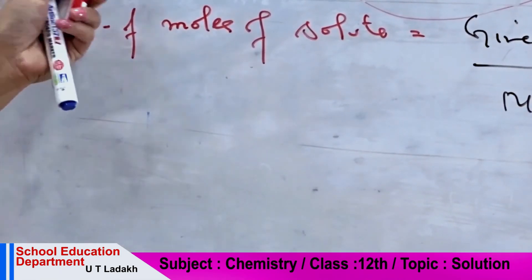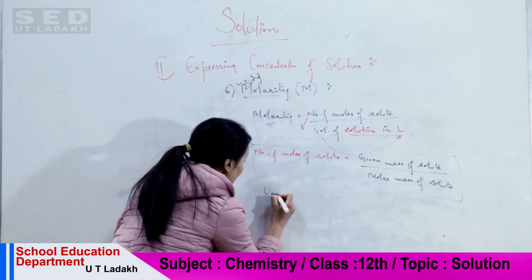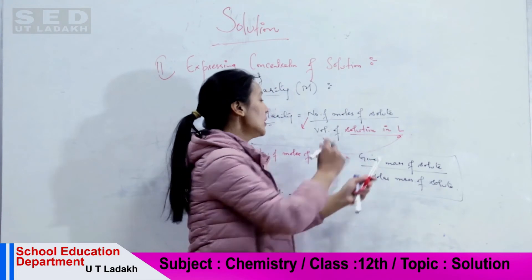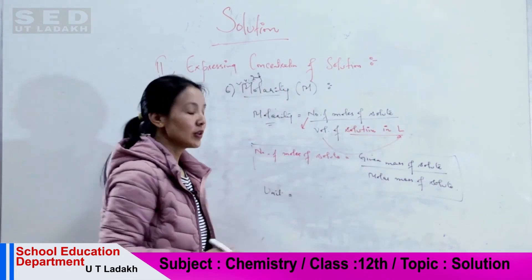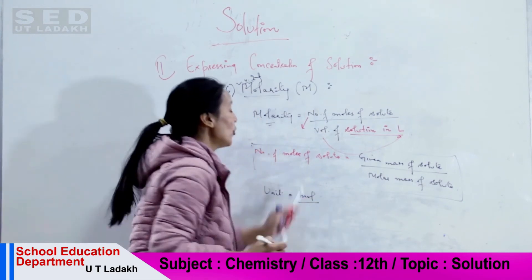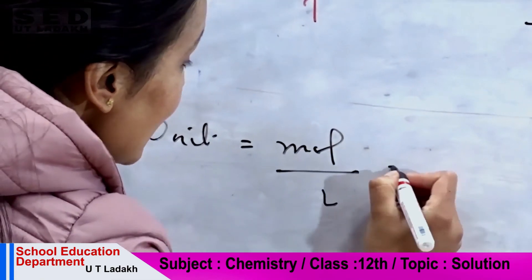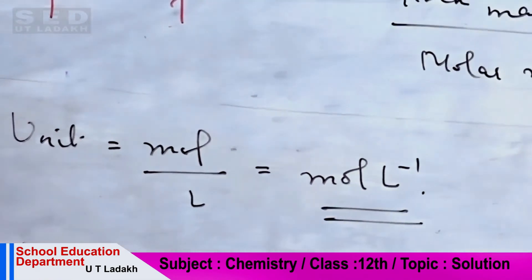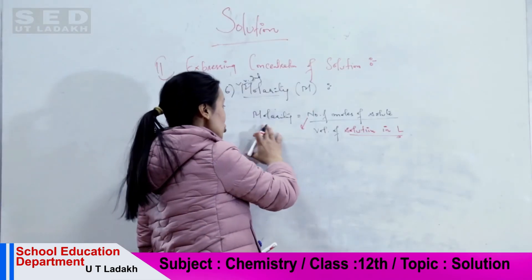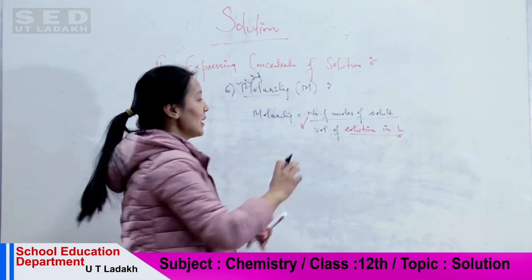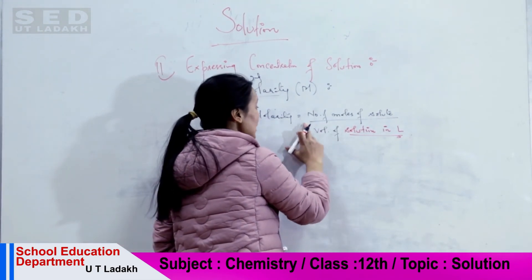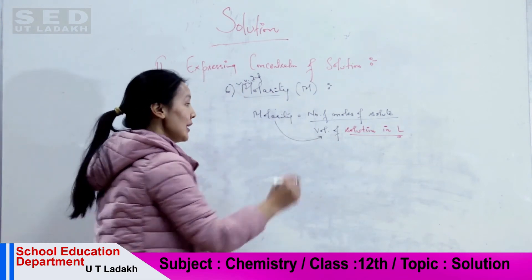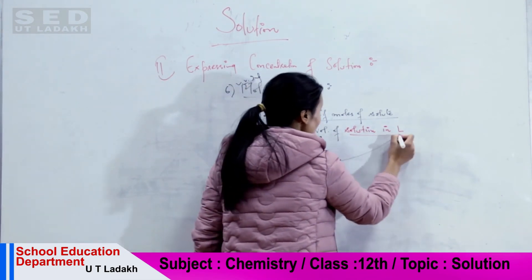Now let us check the unit of molarity. Molarity equals number of moles of solute upon volume of solution in litres, so the unit is moles upon litres, i.e., mol per litre. This is the unit of molarity. An important point: molarity is always related with volume, and volume must always be expressed in litres.